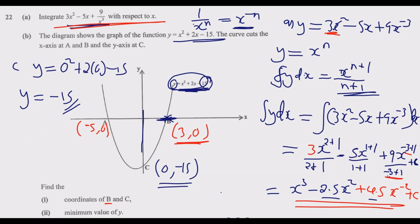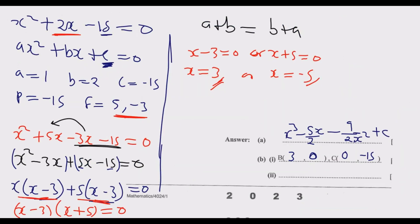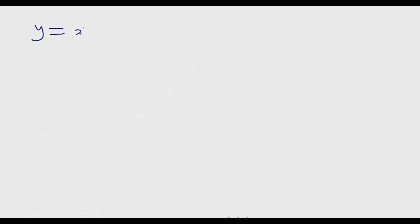To find the minimum value of y (the turning point), we differentiate the function. At the turning point, the change in y with respect to x equals zero, so dy/dx = 0. We differentiate y = x² + 2x − 15 with respect to x, then set the derivative equal to zero and solve for x. Once we find x, we substitute back into the original function to find the minimum value of y.